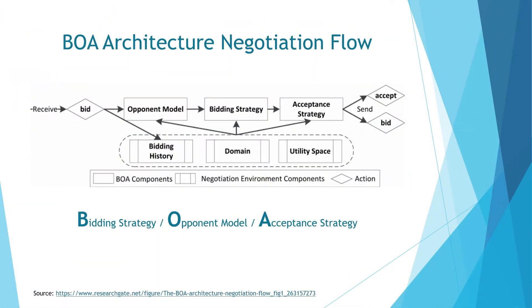Before moving on to the implementation of an agent, let's briefly talk about the BOA architecture. In BOA architecture there are three components: bidding strategy, opponent model, and acceptance strategy. When we develop our agents we will develop three strategies for these components. In a round we receive a bid, evaluate it according to our strategies, and either accept the offered bid or make a counter offer. These strategies are based on the bidding history, the domain, and our utility space.